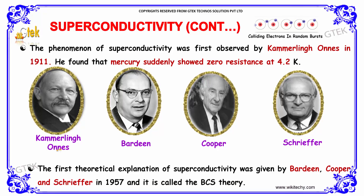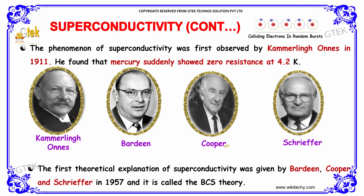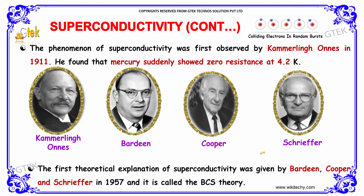The first theoretical explanation of superconductivity was given by three great scientists — Bardeen, Cooper, and Schrieffer — in 1957, and it is called the BCS theory.